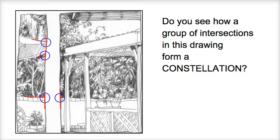In this drawing, do you see how a group of intersections form a constellation? It'll be different constellations, depending on what you're looking at.